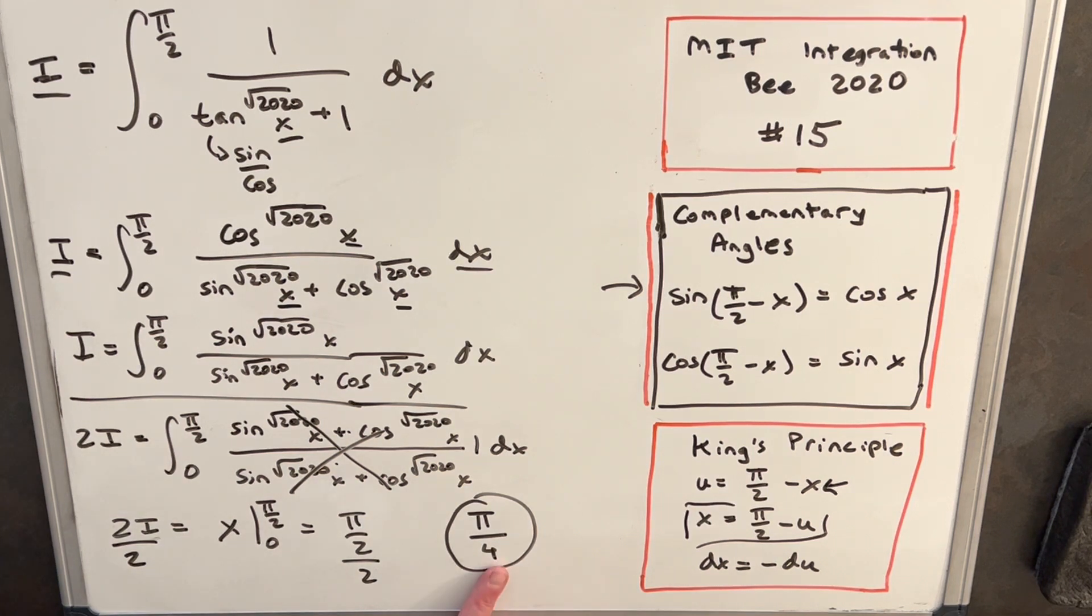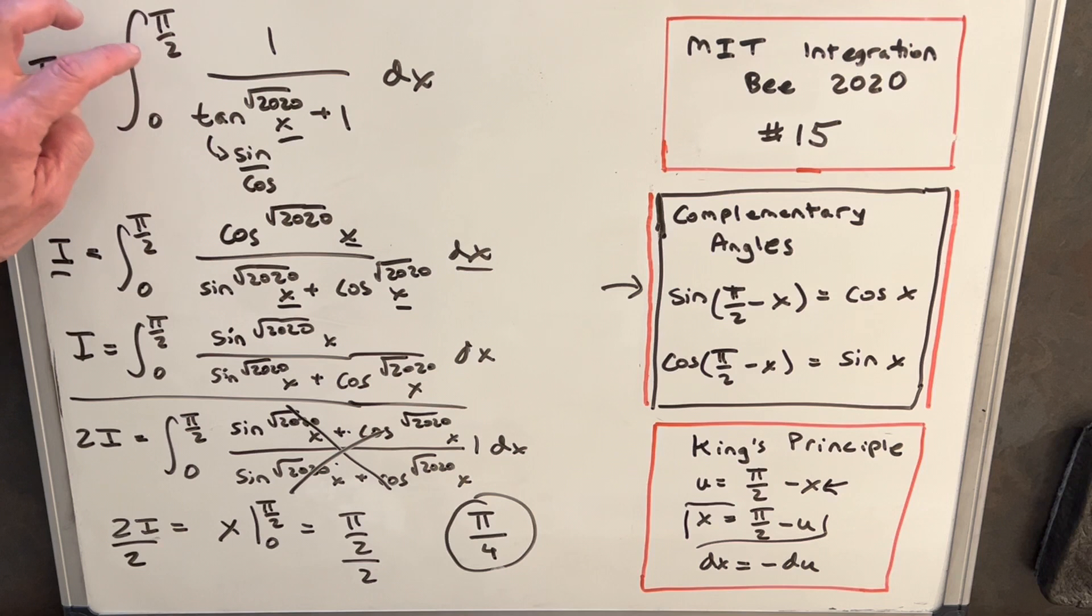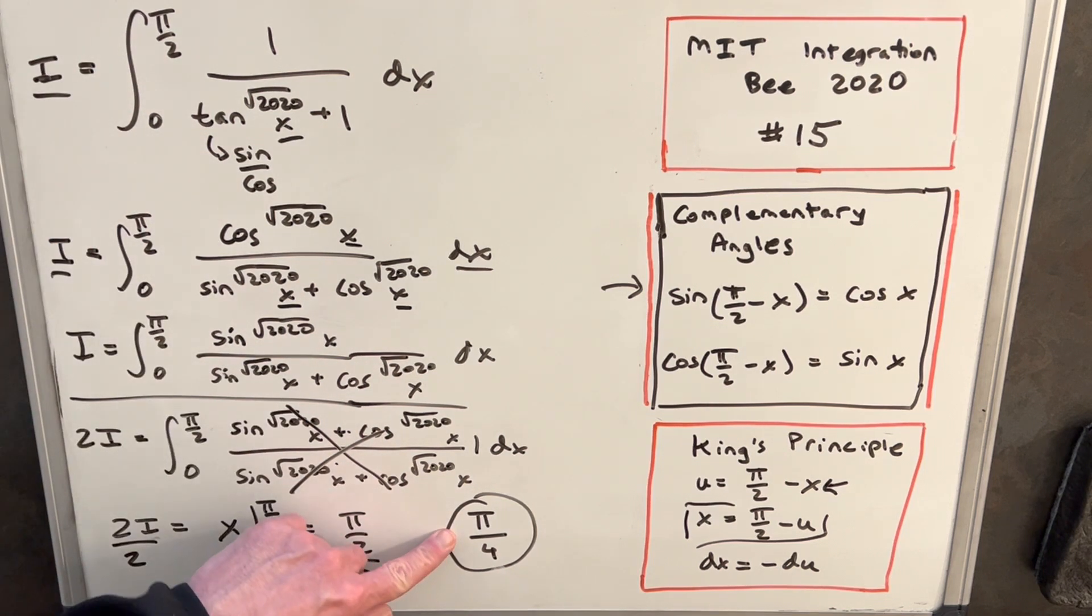And so earlier, the reason why I said you could solve this in one step is when you have this integral, once you identify that this is King's Principle and you know the integral is going to be one, the boundary, you could just go right to the answer and be pi over 2 divided by 2 is pi over 4.